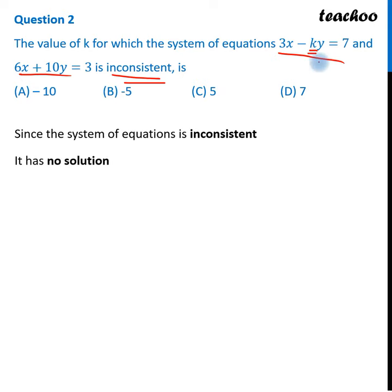And we know that when the system of equations has no solution, then this condition is a1 by a2 is equal to b1 by b2 is not equal to c1 by c2. So with this help, we find out k value.